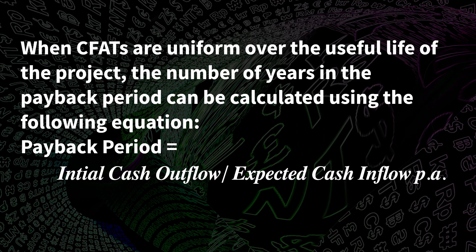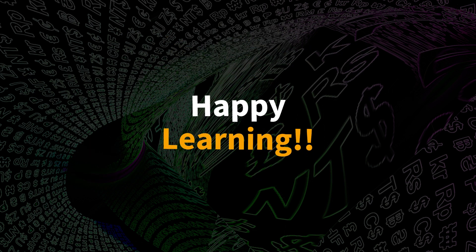First, we discuss when cash flows are uniform over the useful life of the project. The number of years in the payback period can be calculated using the following equation: the payback period is equal to initial cash outflows divided by expected cash inflows per annum. Happy learning!